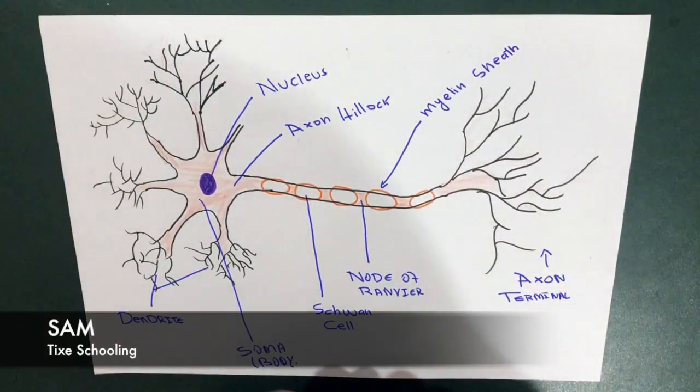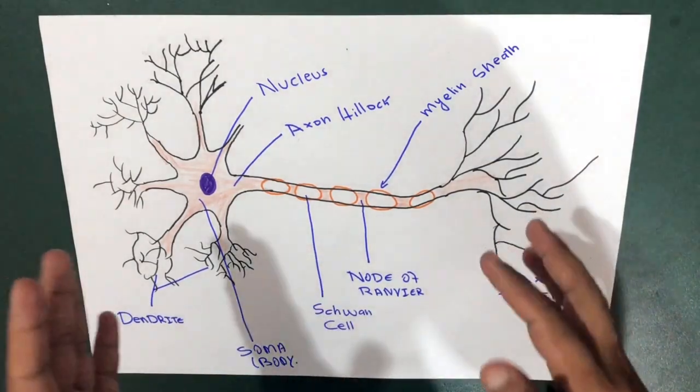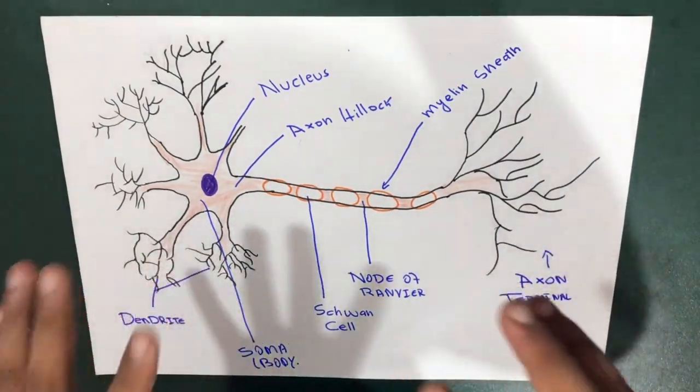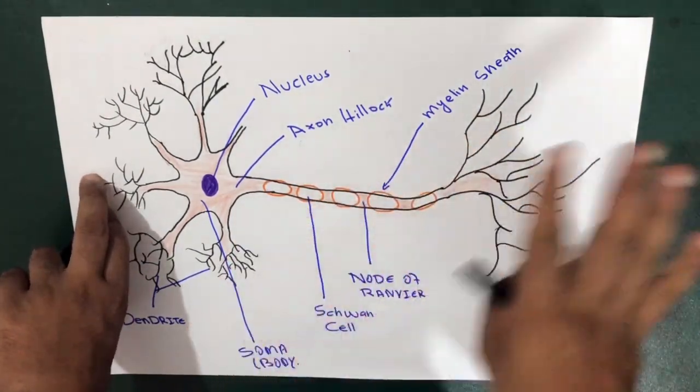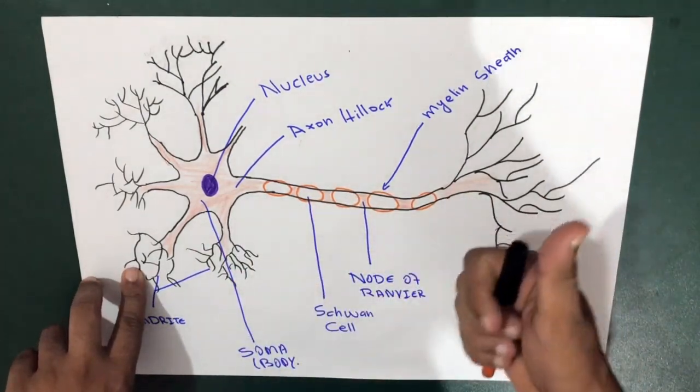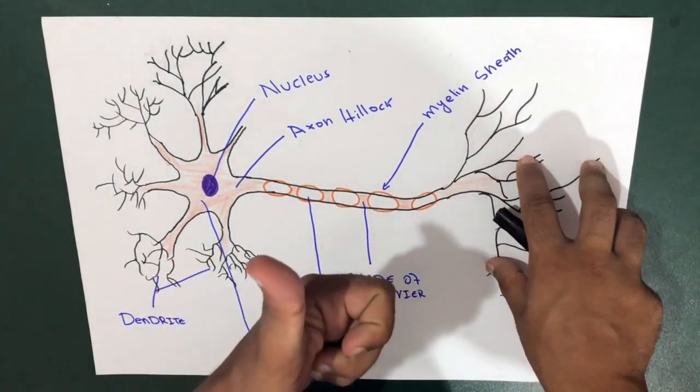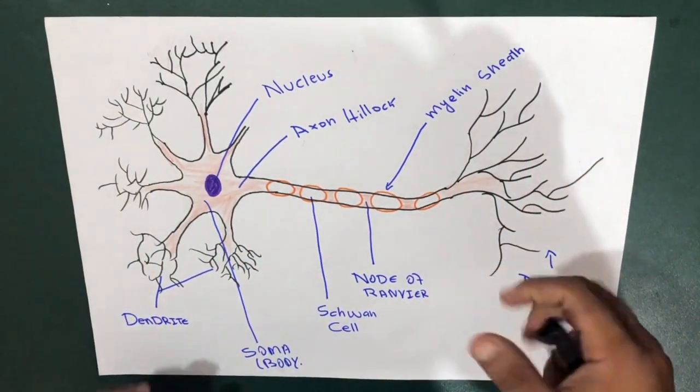Hello learners, this is Sam from Tykes Schooling. In this session we will be talking about the basic structure of a neuron, nothing in detail. We're not going to talk about the types yet. After this video, we're going to upload another video which will be about the types of neurons and the neuro glial cells, which are supportive of the neuron.